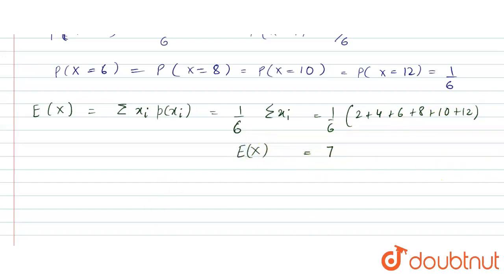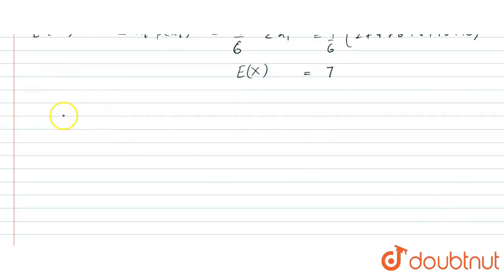For variance, we need expectation of x squared. So, expectation of x squared is sigma x i squared times the corresponding probability. Again, 1 by 6 is common. So, it will be 4 plus 16 plus 36 plus 64 plus 100 plus 144.